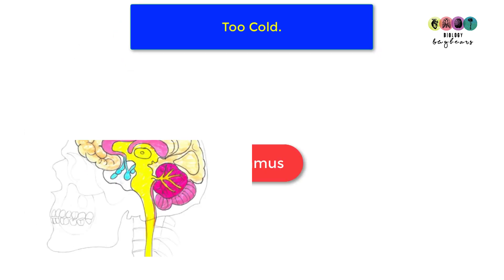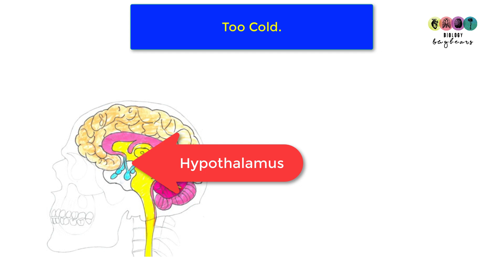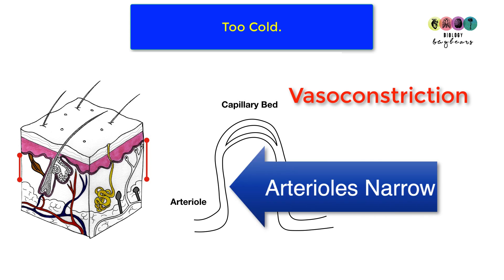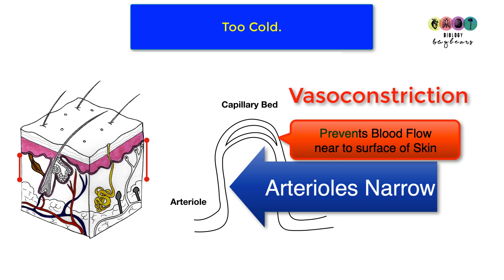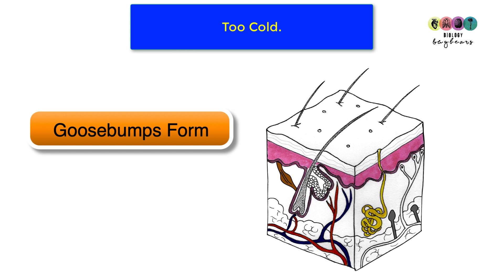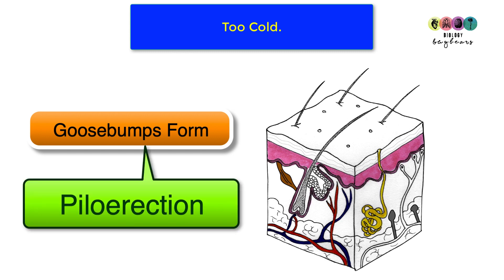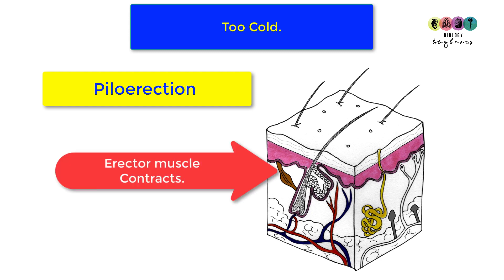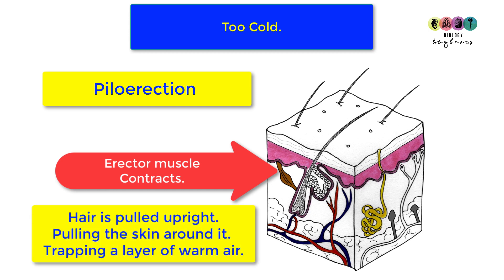When you're too cold, the hypothalamus detects this and vasoconstriction takes place — the arterioles in the dermis narrow, preventing blood from entering the capillary beds near the skin surface, reducing heat loss. This is why you look pale when cold. Also, goosebumps form on the skin surface, known as piloerection. The erector muscle connected to the hair contracts, pulling the hair upright, which traps a layer of warm air near the skin surface.